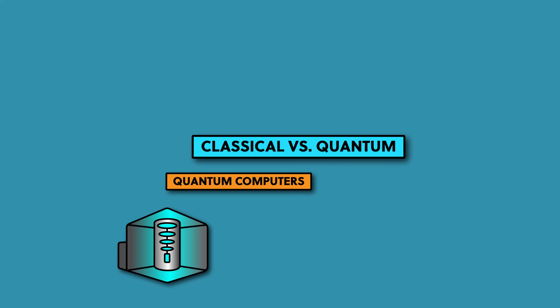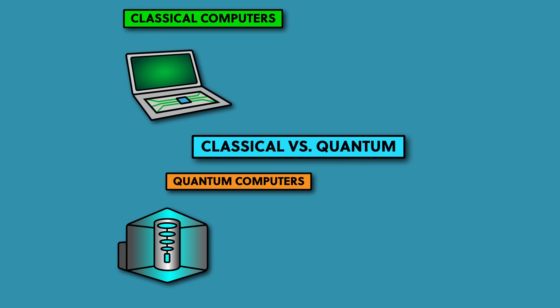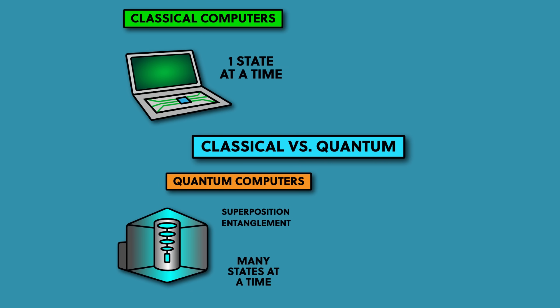This is the map of quantum computing. Quantum computers solve problems in a different way to the computers we're familiar with, which from now on I'll be referring to as classical computers. Quantum computers have certain advantages over normal computers for certain problems, which comes from their ability to be in a huge number of states at the same time, whereas classical computers can only be in one state at a time. To understand this, and to understand how quantum computers work, you need to understand three things: superposition, entanglement, and interference.